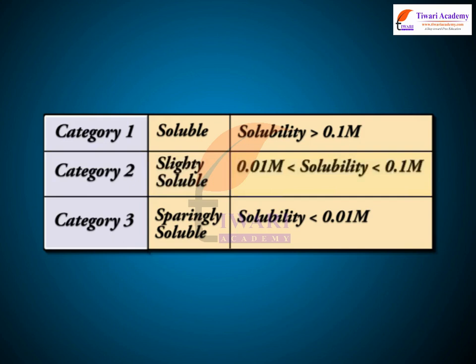Ksp is the solubility product constant. Its value for the above equation at 298 K is 1.1 × 10⁻¹⁰.